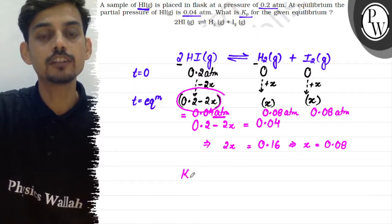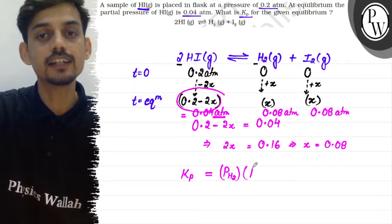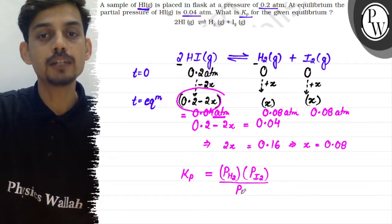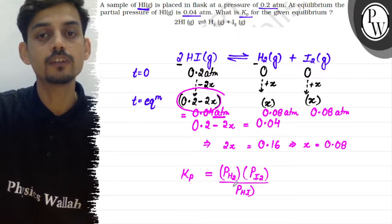The expression of Kp: product side partial pressure divided by reactant side partial pressure. Partial pressure of H2 multiplied by partial pressure of I2 divided by partial pressure of HI whole square.